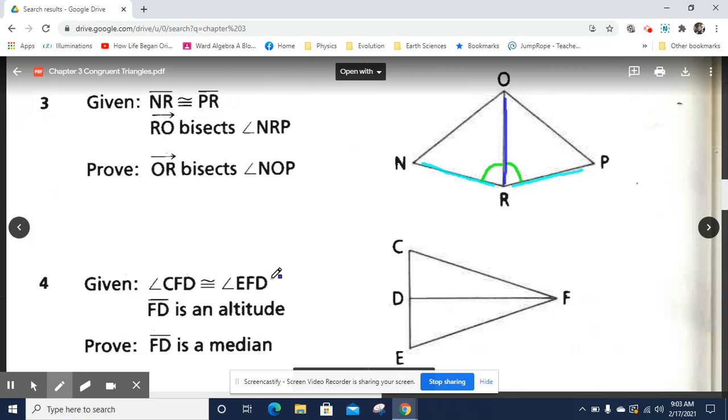If angle NOR, this angle, is congruent to this angle, if those angles are congruent, OR bisects NOP.